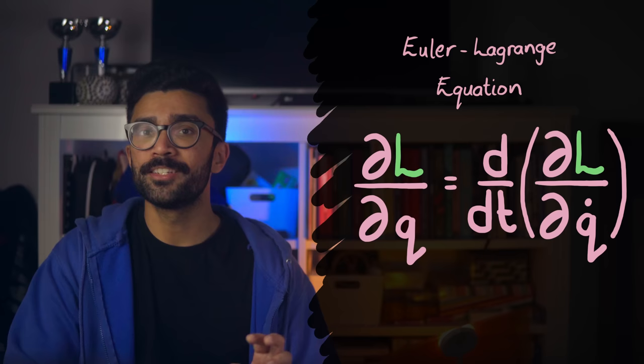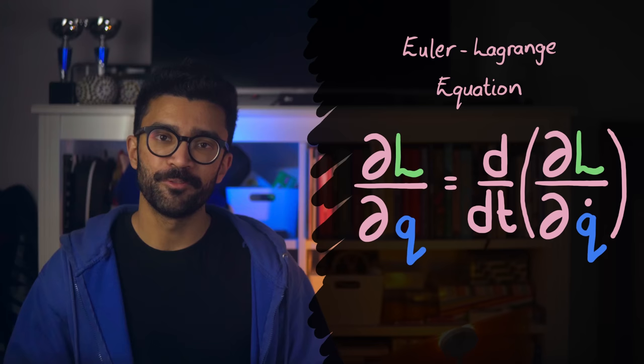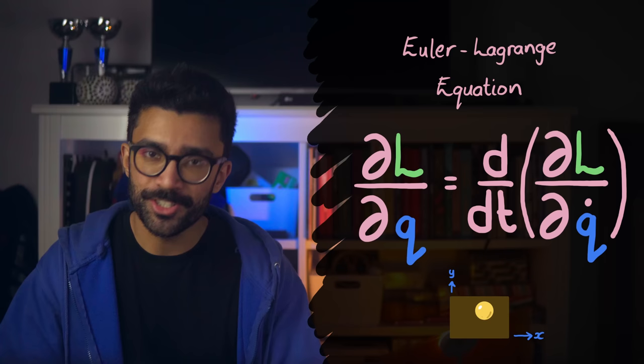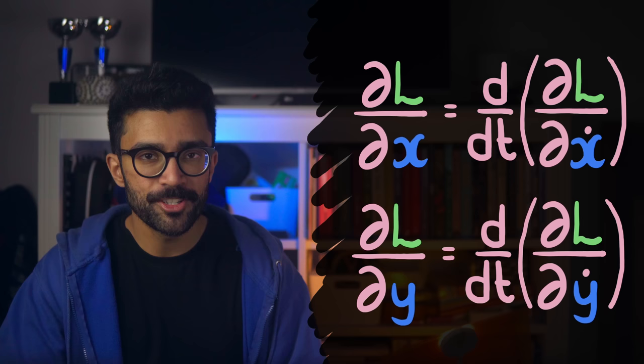First of all, we need to know that this Q thing here is a placeholder. Q just represents any relevant coordinate within our system. For example, if we're studying the movement of a ball on a table surface, then we'd likely use coordinates such as X and Y to represent the position of the ball on the table. And hence, we could replace Q with X to give us one equation, and with Y to give us another equation. In other words, then, the Euler-Lagrange equation allows us to generate one new equation for each coordinate relevant to our system.